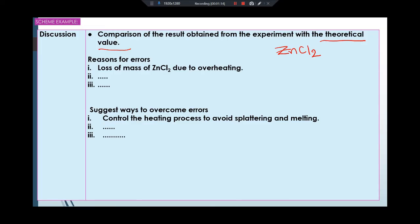Next, you suggest the ways to overcome the errors. For example, for error number one, you suggest: control the heating process to avoid sputtering and melting. So that is your suggestion. Give another two suggestions.